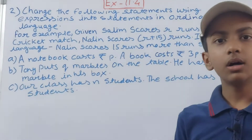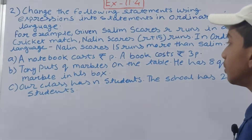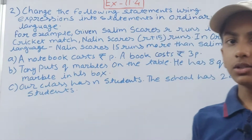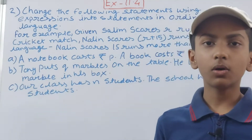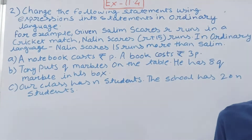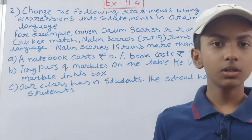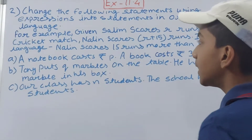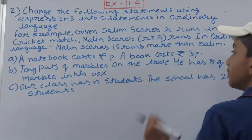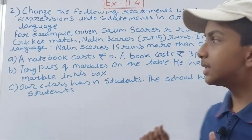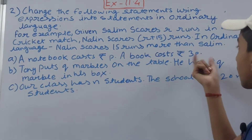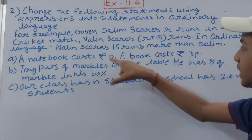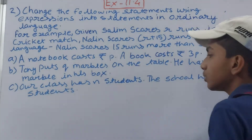Part A: A notebook costs rupees p, a book costs rupees 3p. The notebook costs p rupees, and the book costs 3p rupees. If you compare which one is more expensive, you can see that 3p will have a greater value, so the book will be more expensive because you are multiplying the cost of one notebook by 3.